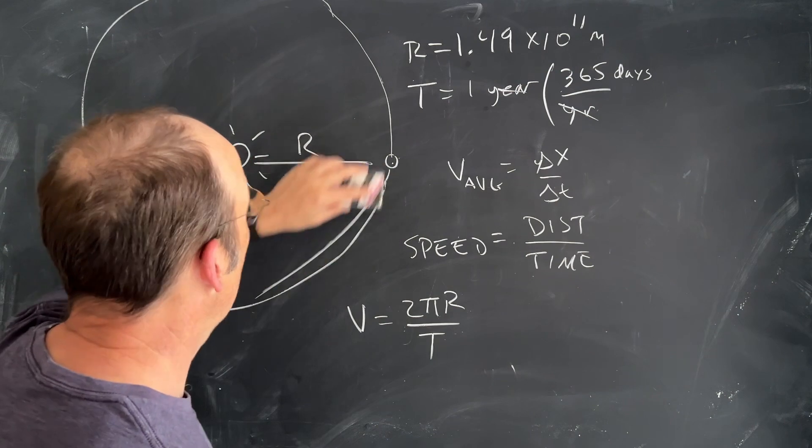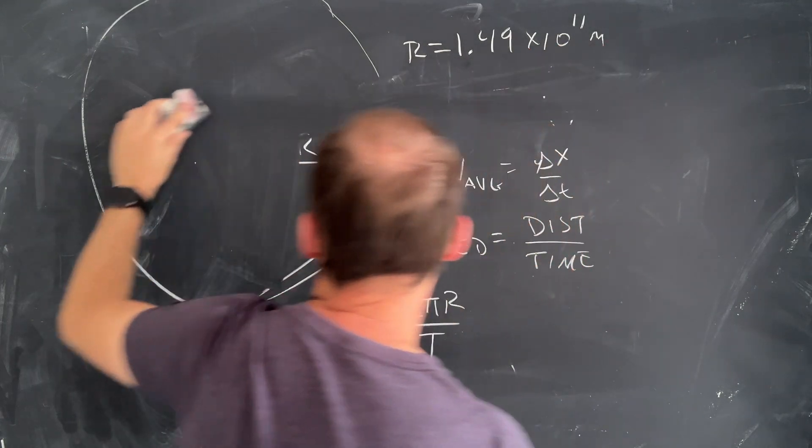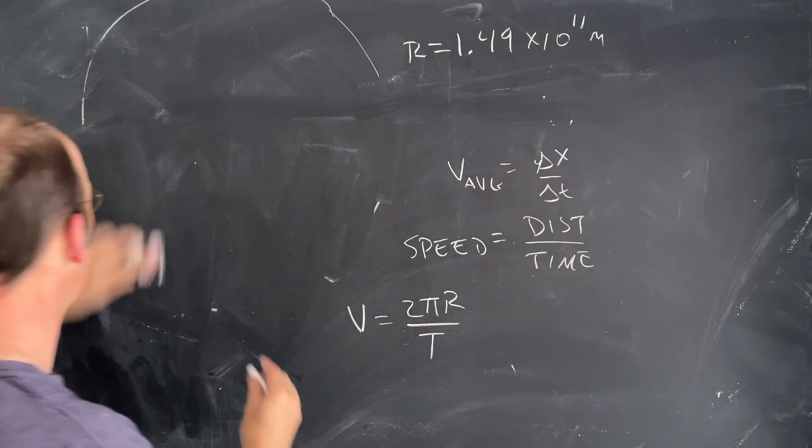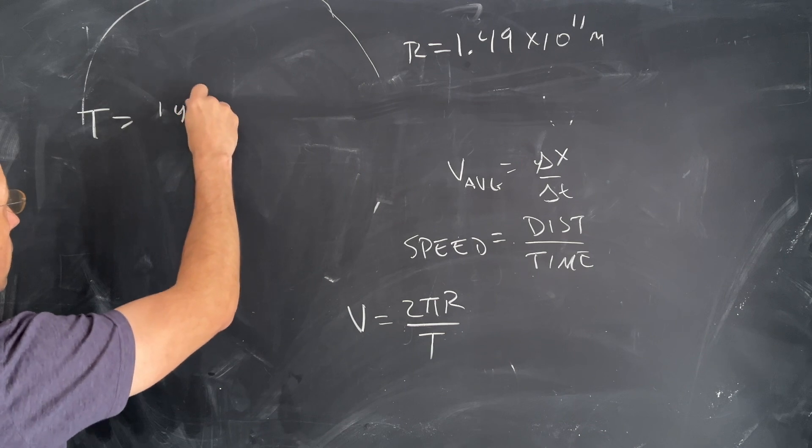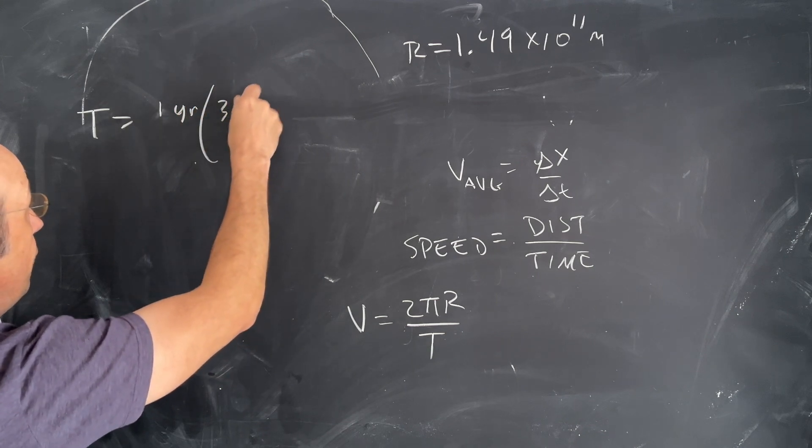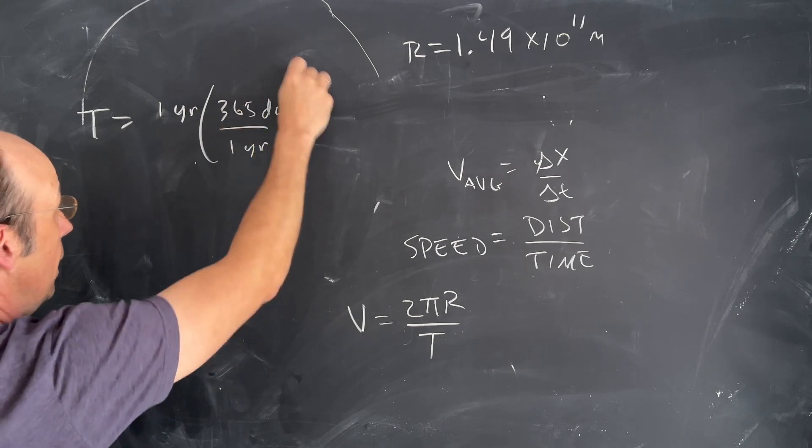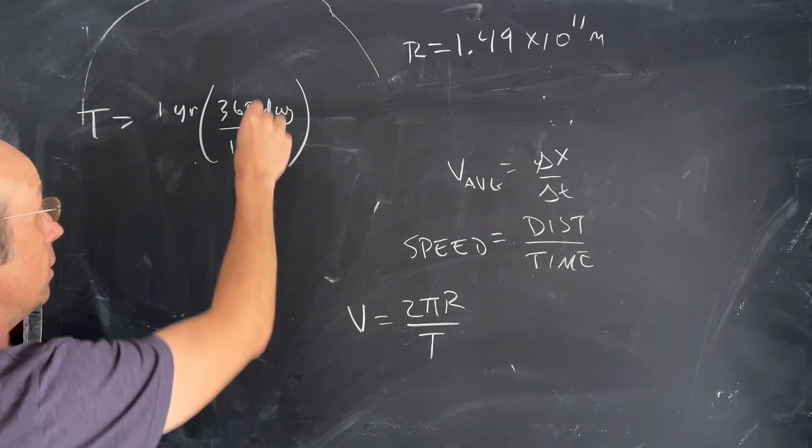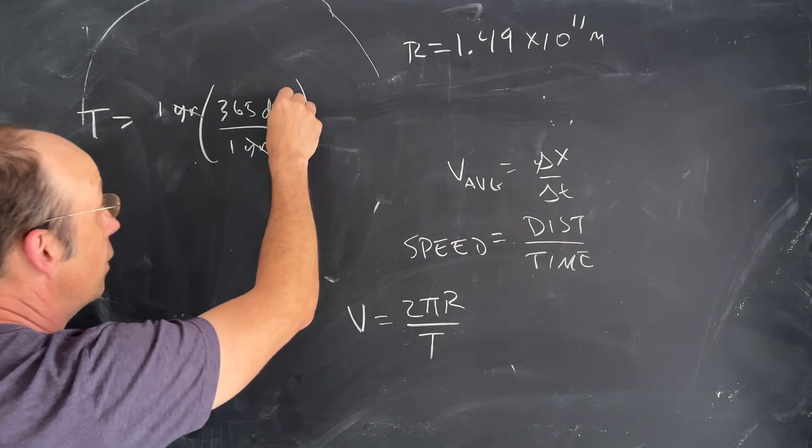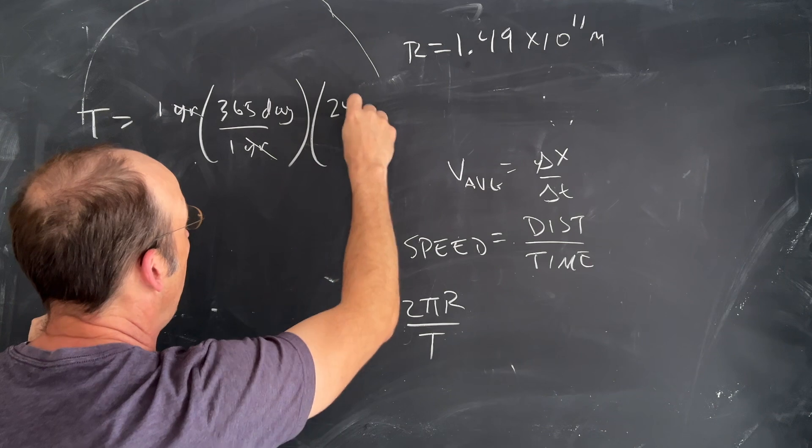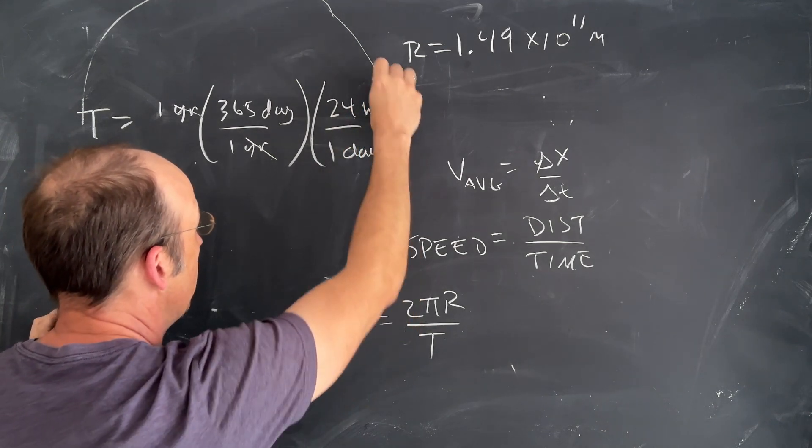Let's convert the time: T = 1 year × (365 days/1 year). For unit conversion, this is the same thing, so I can cancel that unit. Now I need to convert days to hours, so there are 24 hours in one day, and those cancel.